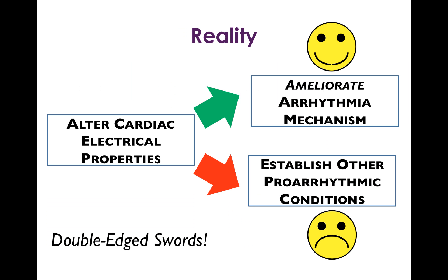But in reality, whenever we alter the cardiac electrical properties, not only do we ameliorate certain arrhythmia mechanisms, but we have the potential for establishing other pro-arrhythmic conditions. In a very real way, the drugs we're going to be talking about are double-edged swords, and it reinforces the concept of first do no harm. You really have to know how to use them to make sure that you're helping your patient and not hurting them.